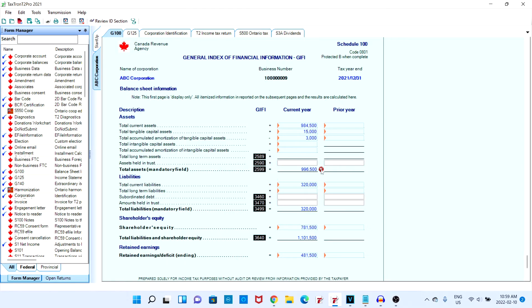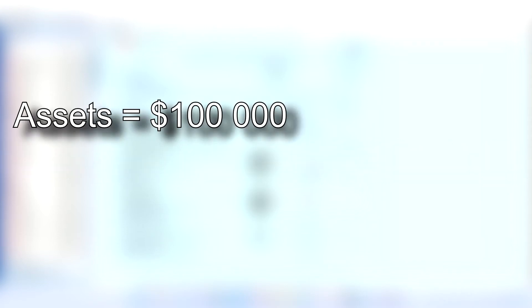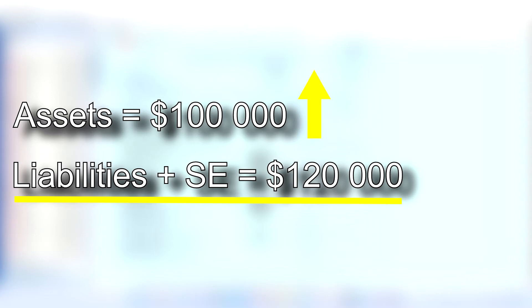The most important aspect when it comes to balance sheets is the fact that your assets must equal your liabilities plus shareholders equity. For example, if our assets are equal to a hundred thousand whereas our liabilities plus shareholders equity is equal to a hundred and twenty thousand, assuming our assets are correct, our liabilities plus shareholders equity must go down. The same goes the other way — if our liabilities plus shareholders equity value is correct, then our assets must increase to balance out the values.